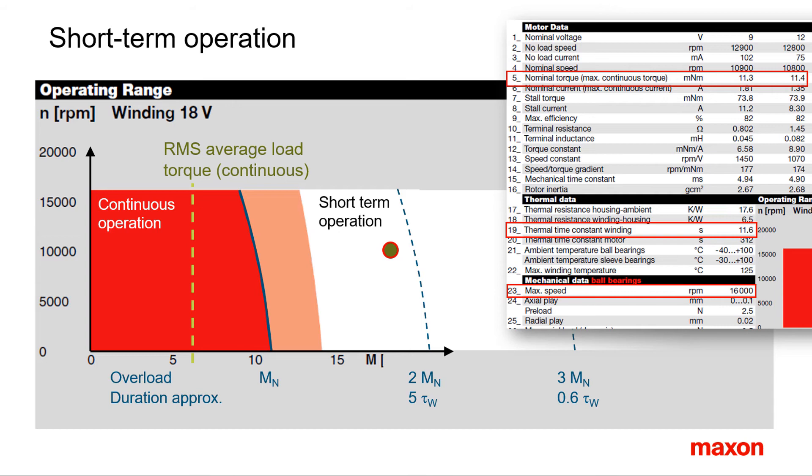Typically, overload can last several seconds, as indicated by the thermal time constant of the winding. Roughly speaking, a motor can support two to three times the nominal torque for periods up to this thermal time constant.